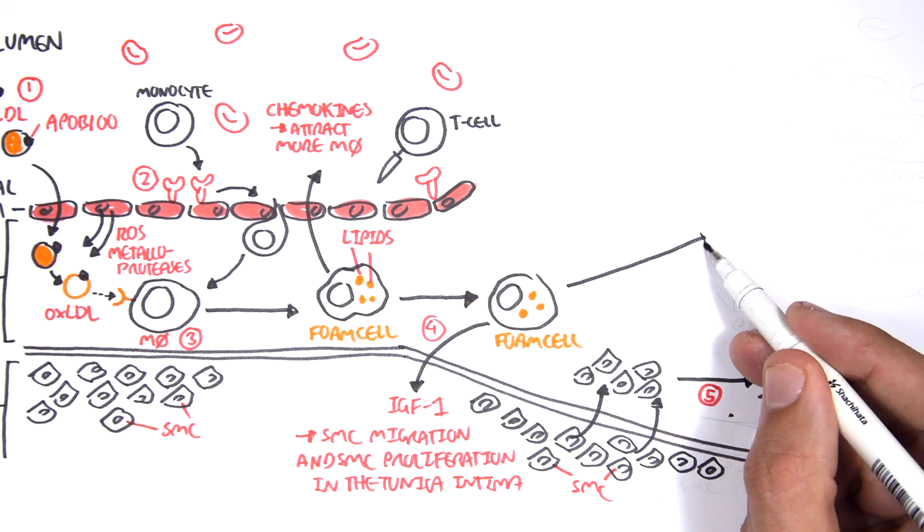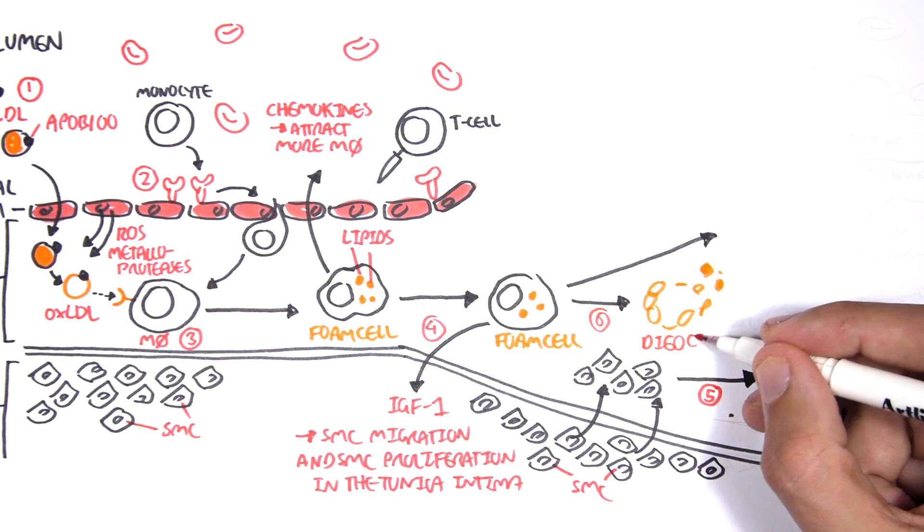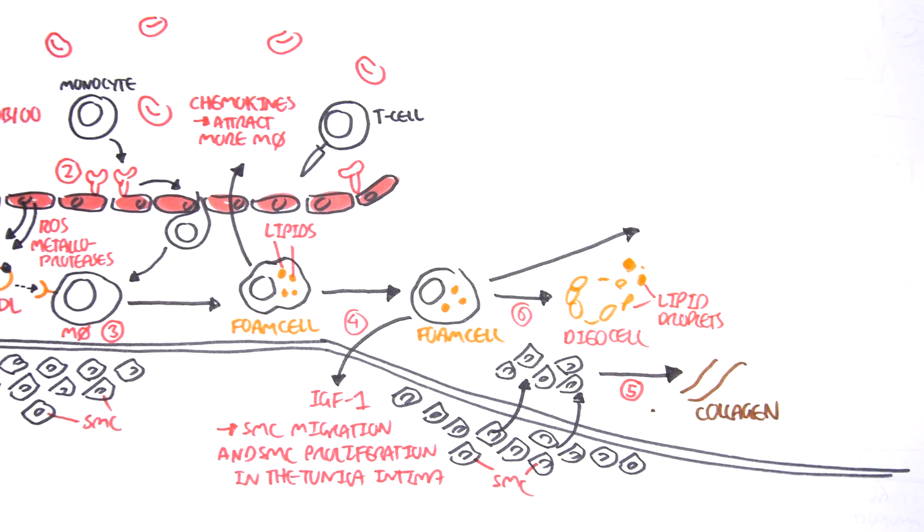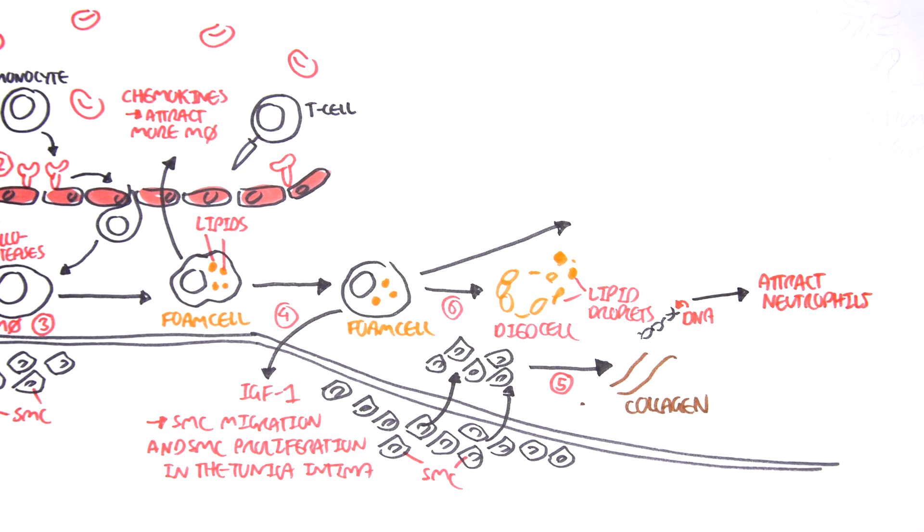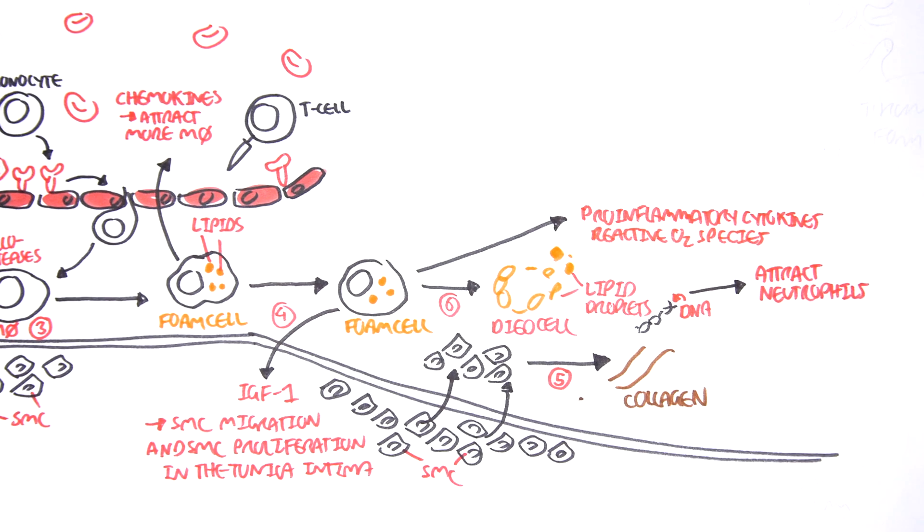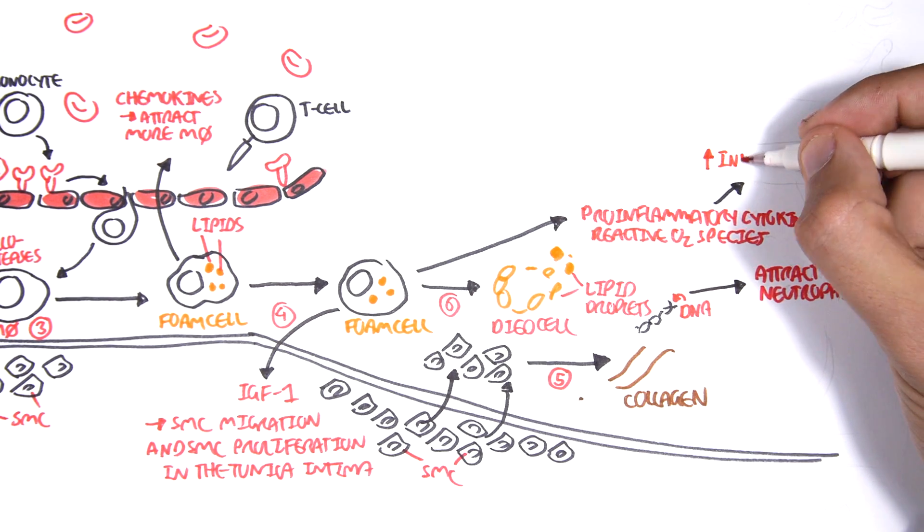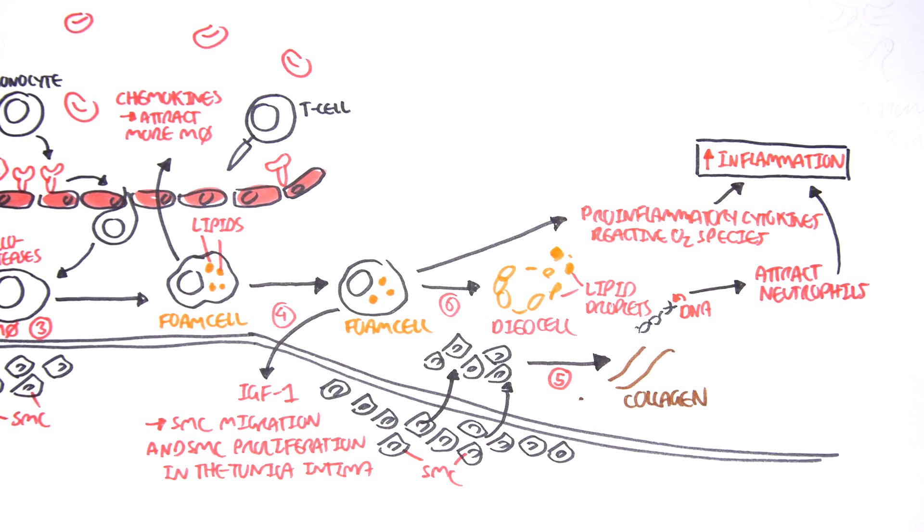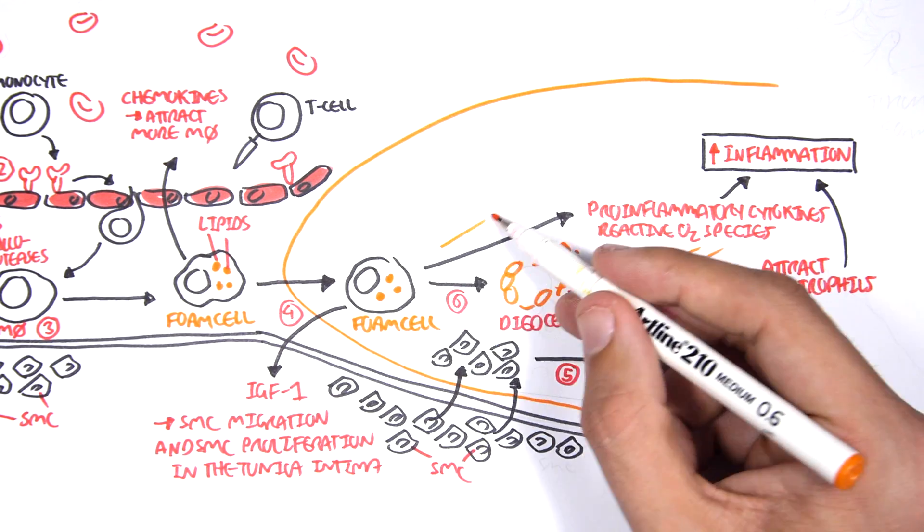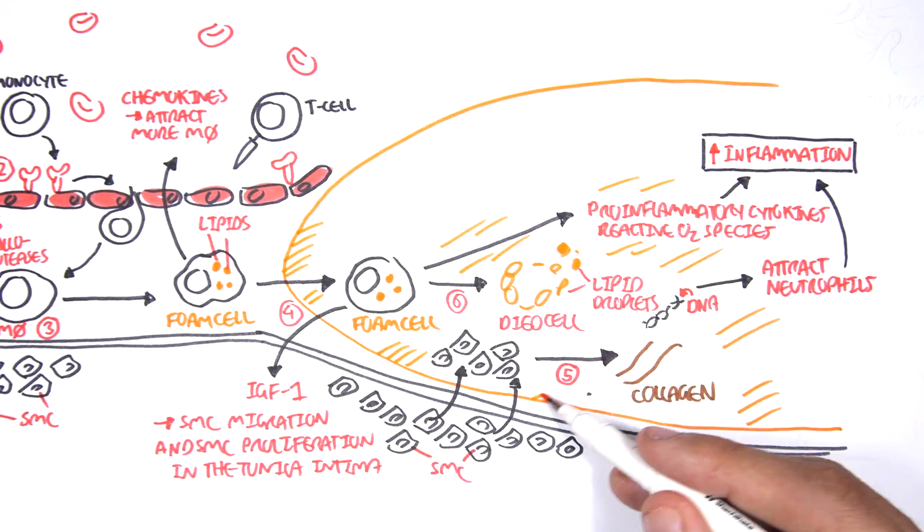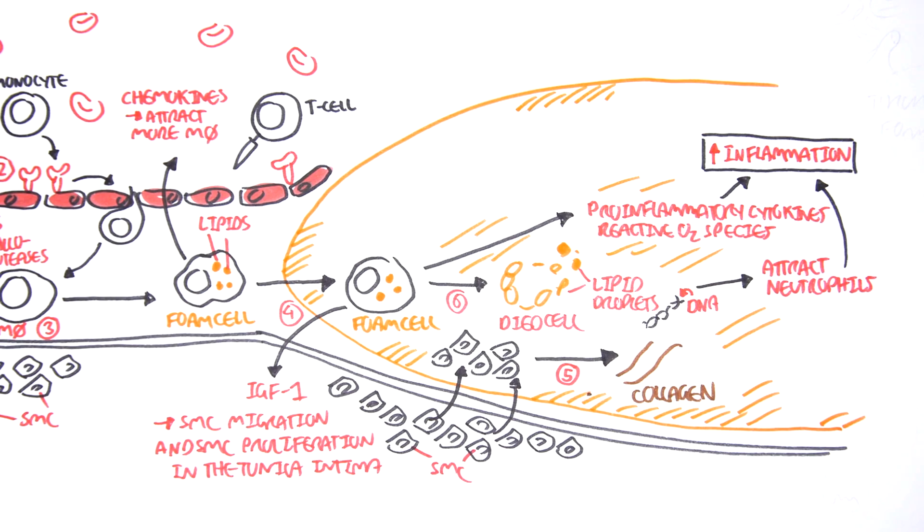Foam cells in step six can also die, and they will die, releasing their lipid contents, including DNA materials. This DNA material will actually attract neutrophils, because it's actually inflammatory in this respect. Foam cells can also release pro-inflammatory cytokines and reactive oxygen species. And this, together with neutrophils, will increase inflammation in the area. And this area is actually now the plaque. Because it's got foam cells, dead foam cells, collagen, smooth muscle cells. It's got all this stuff. And this makes up the plaque.